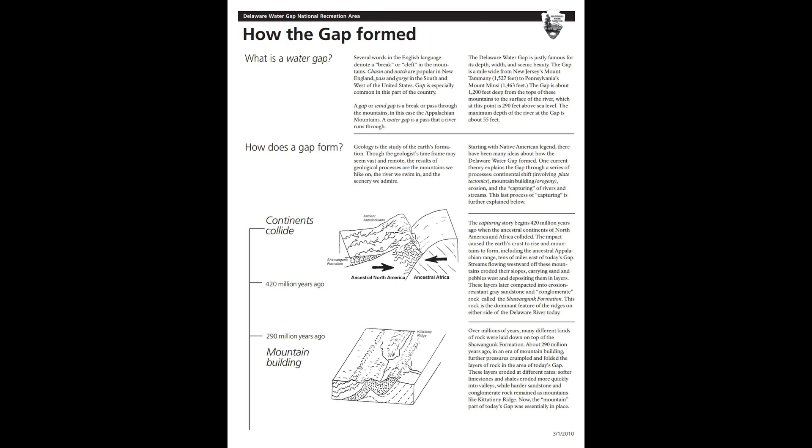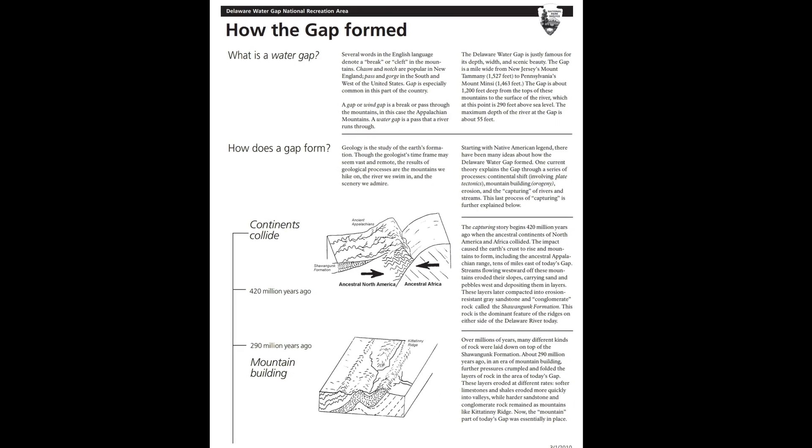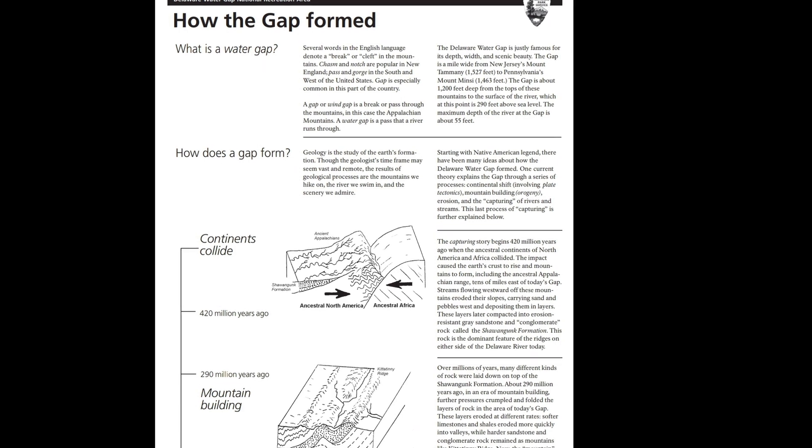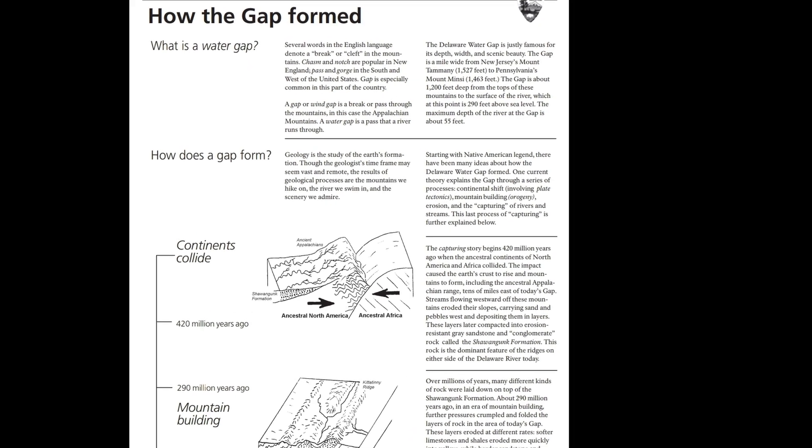How does a gap form? Geology is the study of the Earth's formation. Though the geologist's time frame may seem vast and remote, the results of geological processes are the mountains we hike on, the river we swim in, and the scenery we admire. Starting with Native American legend, there have been many ideas about how the Delaware Water Gap formed. One current theory explains the gap through a series of processes.